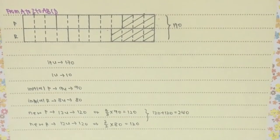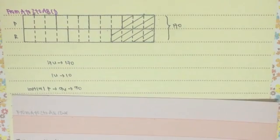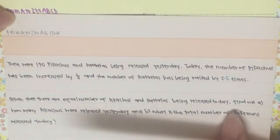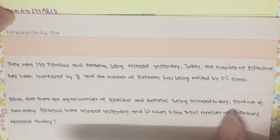So basically, the number of Pikachus being released yesterday would be equal to 90, and the total number of Pokemons that were released today is 240.